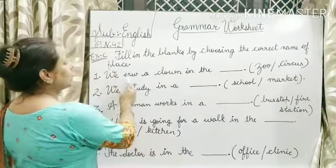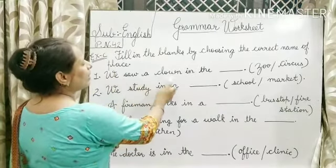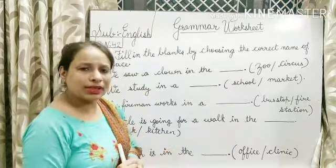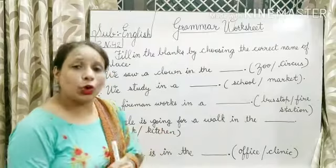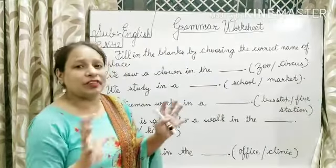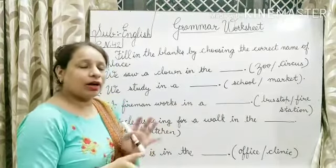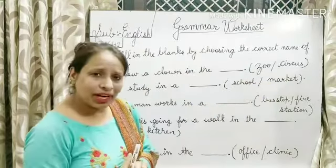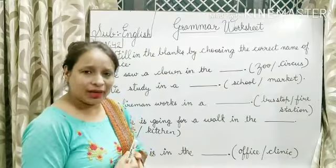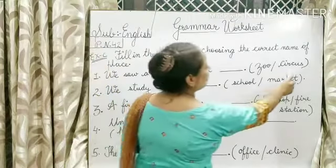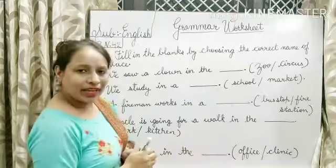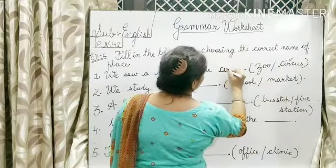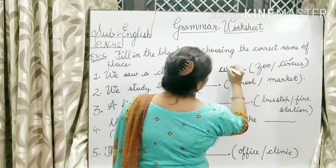First of all, we see a clown in the blank. Clown ka matlab kya hota hai? Clown means joker — jo apni naak ke upar ball laga ke funny funny baatein karta hai, aapko hasi aa jaati hai. Kya woh zoo mein milta hai, kya woh circus mein milta hai? Zoo mein alag animals hote hain. Toh clown hame circus mein milta hai. So the answer is circus. C-I-R-C-U-S, circus.